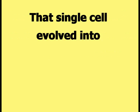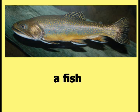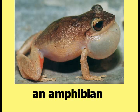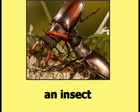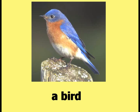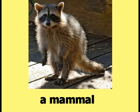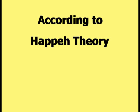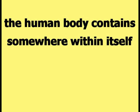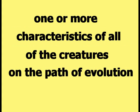That single cell evolved into a fish, an amphibian, a reptile, an insect, a bird, a mammal, and finally into a human being. According to happy theory, the human body contains somewhere within itself one or more characteristics of all of the creatures on the path of evolution.